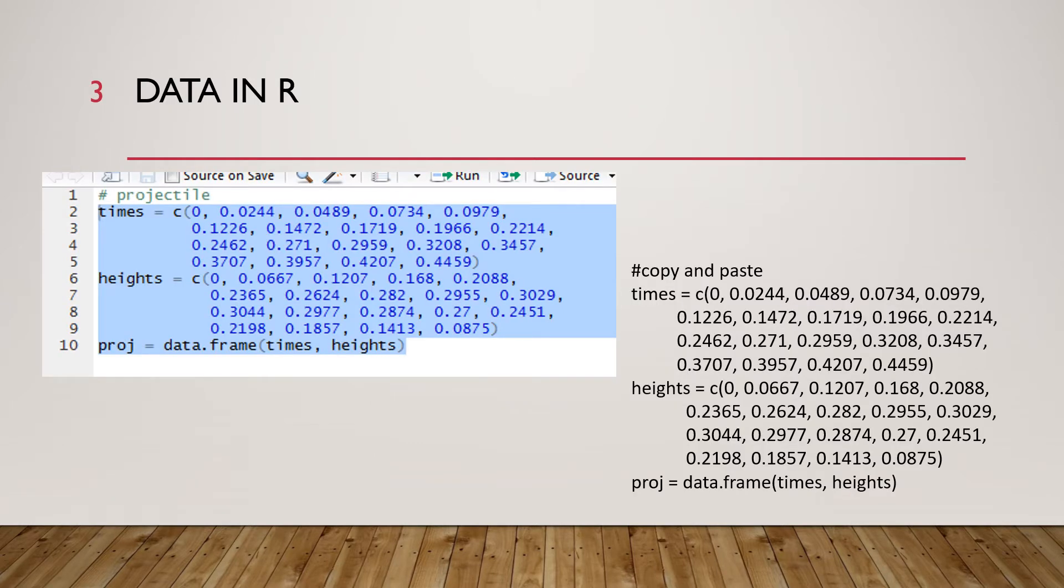Here we are inputting the data that we are going to plot and then fit. In line two we are assigning a set of numbers to the times variable. The times variable is a vector we're using the c or concatenate function in R. In line six we are doing a similar operation but we're establishing the heights and then in line 10 we are combining the times vectors and the heights vectors into a data frame we're calling proj for projectile.